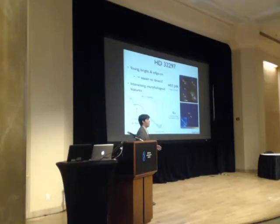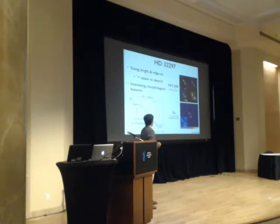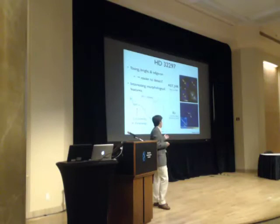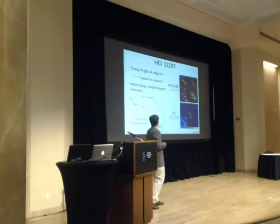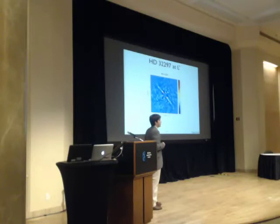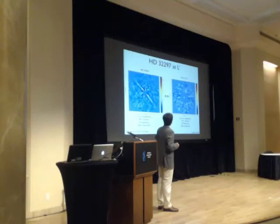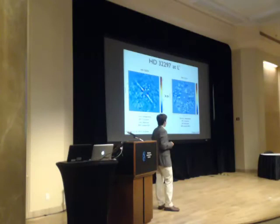Now for HD 32297 — another interesting disk: young, bright, and edge-on, making it easy to detect. I'm showing HST images from John Debes, and recently Thayne Curry and Anthony Boccaletti both obtained Ks band images from the ground with Keck and VLT, finding an asymmetry between the two sides and a flattening possibly suggesting multiple belts. All the more reason to look at long wavelengths. At L prime it looks very nice — very similar to the K band image — and compared to our HD 15115 work we've really improved things with more integration time, more field rotation, and a new detector.